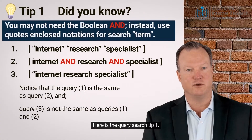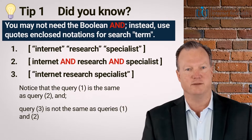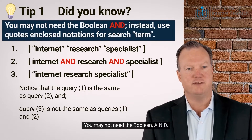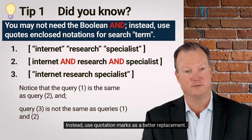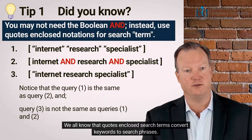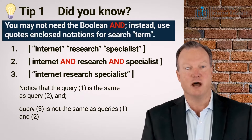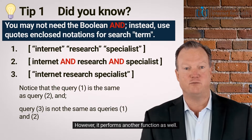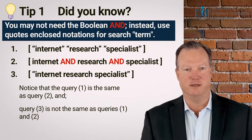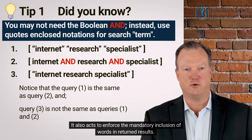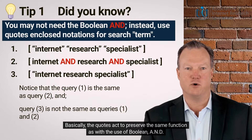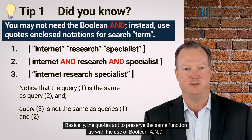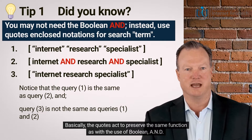Here is query search tip one: you may not need the boolean AND. Instead, use quotation marks as a better replacement. We all know that quotes in a closed search term convert keywords to search phrases. However, it performs another function as well — it also acts to enforce the mandatory inclusion of words in returned results. Basically, quotes act to preserve the same function as the boolean AND.